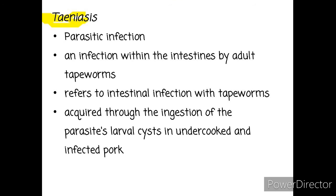The next disease is taeniasis. Taeniasis is a parasitic infection within the intestines by adult tapeworms. Taeniasis is acquired through the ingestion of the parasite's larval cysts in undercooked and infected pork.